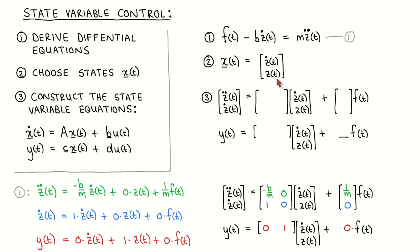The third modeling step is to construct the state variable equations. With our choice of states, the state variable equations should have the required form. We therefore have to manipulate the differential equation so that we can write the derivatives of the states in terms of the input. We also have to write the output in terms of the states and the input. Since the differential equation contains the derivative of the first state, we divide by m to write it as a constant times the first state plus a constant times the second state plus a constant times the input. We then fill in the first line of the state equation.